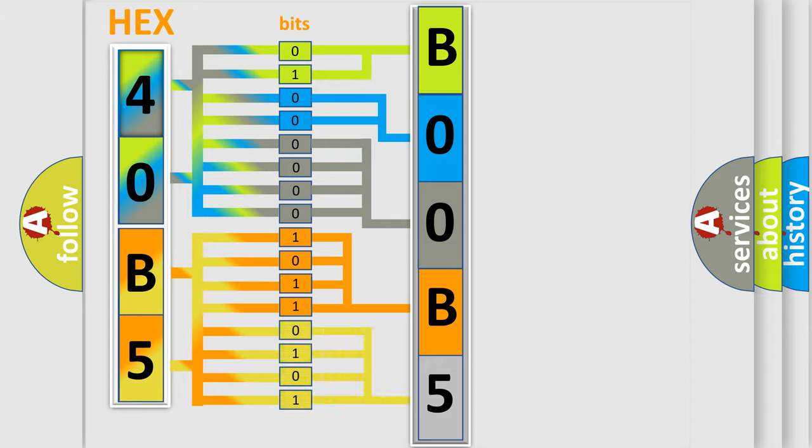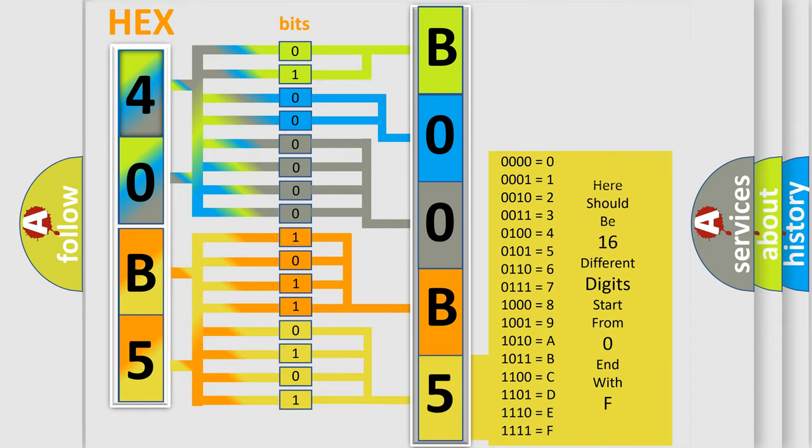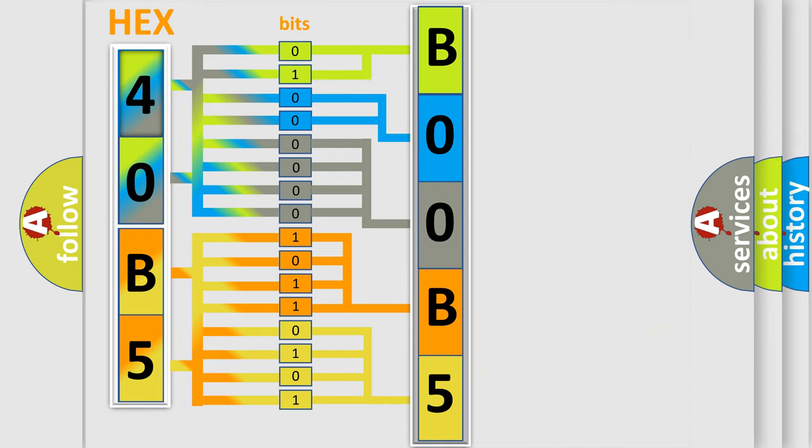A single byte conceals 256 possible combinations. We now know in what way the diagnostic tool translates the received information into a more comprehensible format.